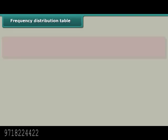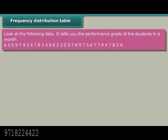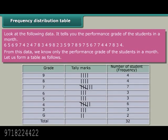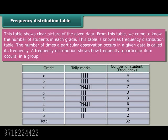Frequency distribution table. Look at the following data. It tells you the performance grade of the students in a month. From this data, we know only the performance grade of the students in a month. Let us form a table as follows. This table shows clear picture of the given data. From this table, we come to know the number of students in each grade.